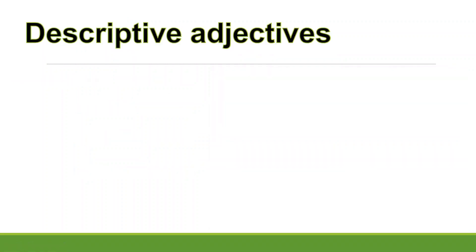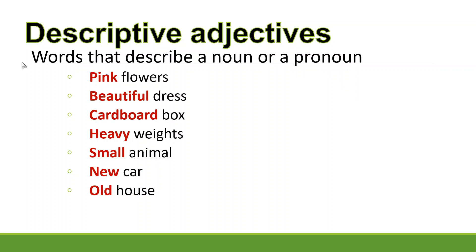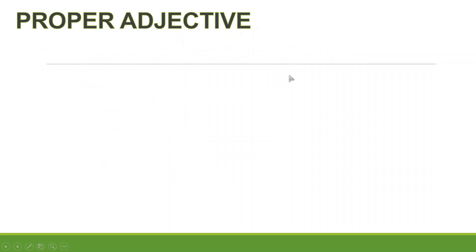There are two types of adjectives. First, descriptive adjectives — words that literally describe a noun or pronoun directly. Examples: pink flowers, beautiful dress, cardboard box, heavy weights, small animal, new car, old house. The words pink, beautiful, cardboard, heavy, small, new, and old are all descriptive adjectives because they directly describe a noun or pronoun.